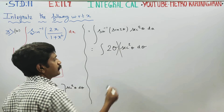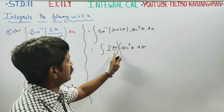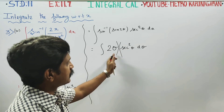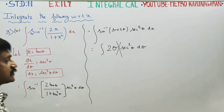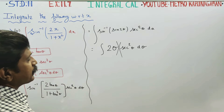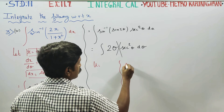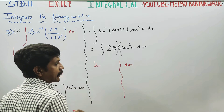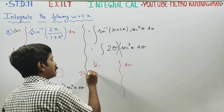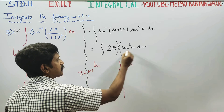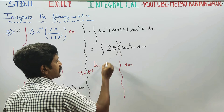You can see that theta is an algebraic function and secant square theta is a trigonometric function. Since two things are multiplied, we use integration by parts. For u, we choose the algebraic function theta, as there is no inverse or log function present. Everything else, which is 2 secant square theta d theta, becomes dv.